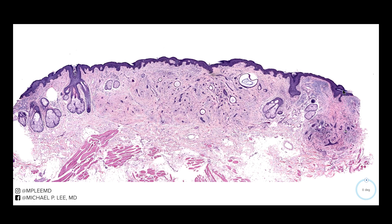This is a desmoplastic trichoepithelioma. This lesion is important because it is a differential diagnosis, at least histologically, between several other carcinomas, namely morpheaform basal cell carcinoma as well as microcystic adnexal carcinoma. Occasionally they may be confused also with syringomas and desmoplastic syringomas.